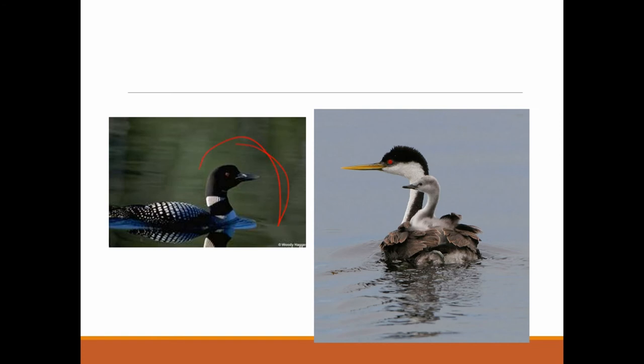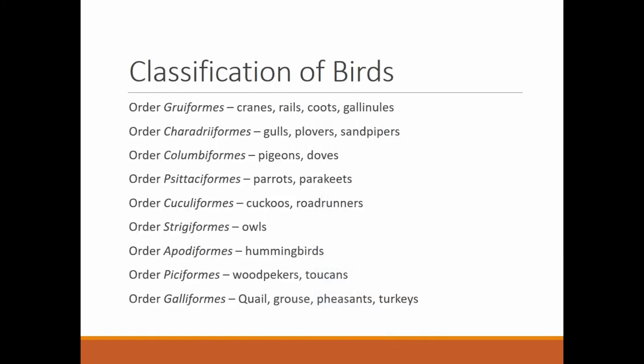Additional orders include: Gruiformes (cranes, rails, coots, gallinules — your wading birds), Charadriiformes (gulls, plovers, sandpipers), Columbiformes (pigeons and doves), Psittaciformes (parrots and parakeets), Cuculiformes (cuckoos and roadrunners), Strigiformes (owls), Apodiformes (hummingbirds), Piciformes (woodpeckers and toucans), and Galliformes (quail, grouse, pheasants, and turkey).